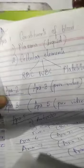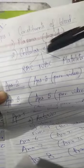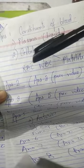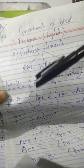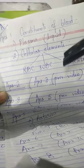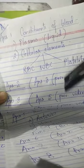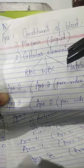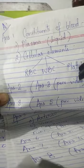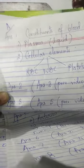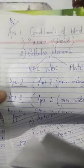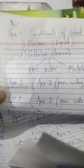So answer number one is constituents of blood are, first is plasma, second is cellular elements. Now plasma, you will write liquid, and cellular elements are of three types: RBC or red blood cells or erythrocytes, WBC or white blood cells or leukocytes, and platelets or thrombocytes. So this is answer number one. What are the constituents of blood, or name the constituents of blood. Now in your book, answer number two is the same as answer three which I have discussed in the previous video.